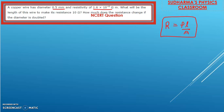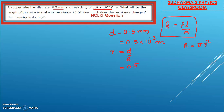Now let us see what data is given. The wire has a diameter of 0.5 millimeter, that is 0.5 × 10⁻³ meters. We need to calculate the area, so we use A = πr². The radius r equals diameter divided by 2, that is 0.25 × 10⁻³ meters. Resistivity ρ equals 1.6 × 10⁻⁸ ohm meter, and resistance R equals 10 ohm.